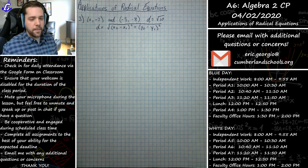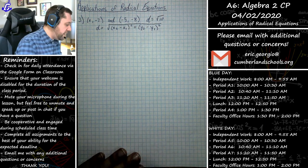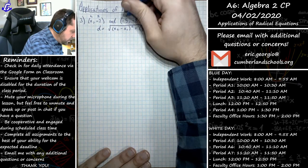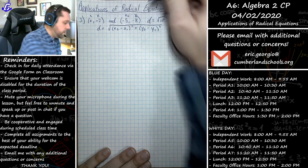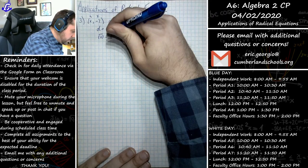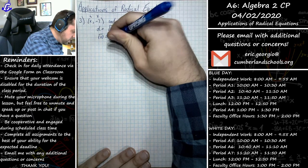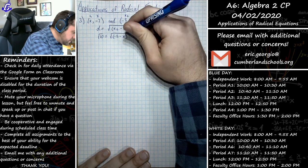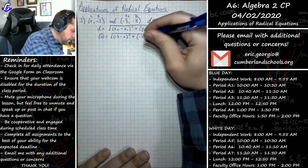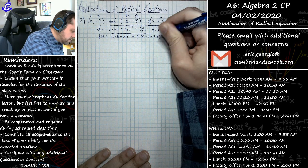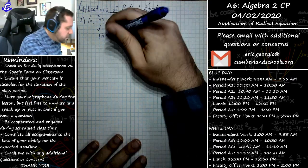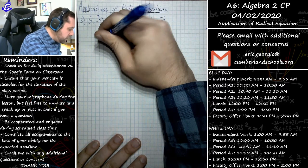Let's plug in what we know and solve for what we don't. I'm calling the first point x₁, y₁ and the second point x₂, y₂. My distance, the square root of 10, equals the square root of (negative five minus x) squared plus (negative eight minus negative seven) squared. We don't like that big radical, so we're going to square both sides right away to get rid of it.